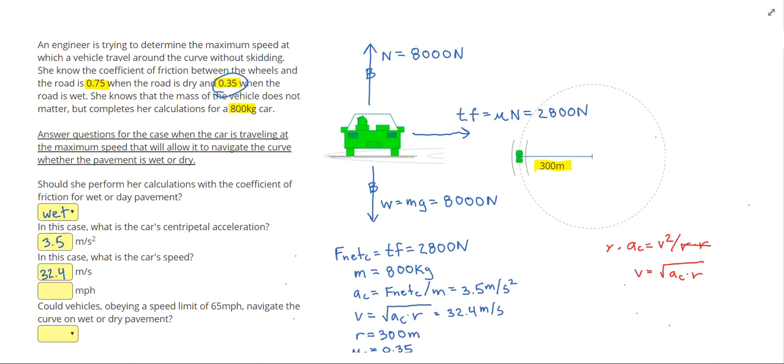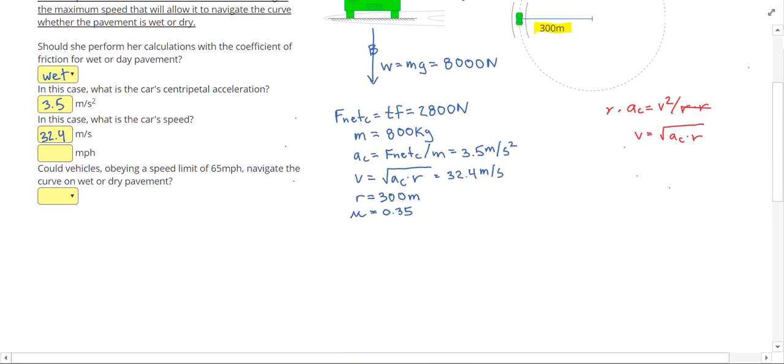It also wants us to answer in miles per hour. So 32.4 meters per second. Now we need a double conversion box. I know that there are 1,609 meters in one mile, and 3,600 seconds in an hour. Multiplying across the top, 32.4 times 3,600, dividing on the bottom, I get 72.5 miles per hour.